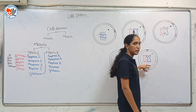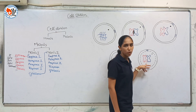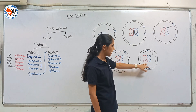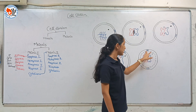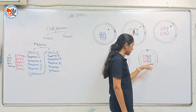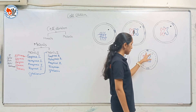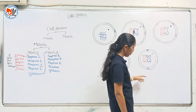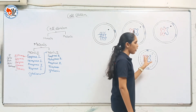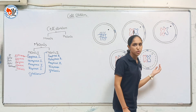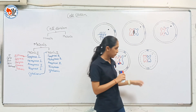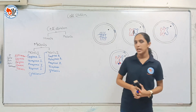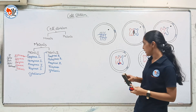After diplotene, there will be diakinesis. In diakinesis, the nuclear envelope and nucleolus will disappear, and centrioles move towards opposite poles. Homologous chromosomes also continue to separate further. In this way, prophase 1 is complete.